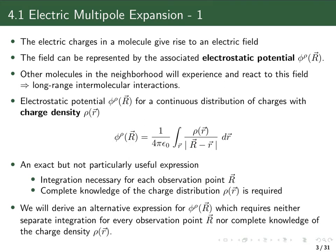However, this exact expression is not particularly useful because we have to evaluate the integral for every observation point again. If we want to map the electrostatic potential outside of a molecule, we would have to carry out this integration many times for every observation point. Also, we need to know exactly the charge distribution over the area of the molecule. We will now derive an alternative expression that requires neither repeated integration over space nor exact knowledge of the charge distribution.